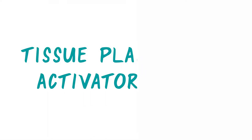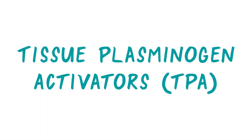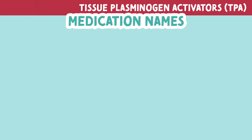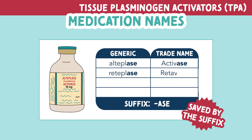Let's talk about tissue plasminogen activators, or TPAs. We are saved by the suffix because most of these medications end in '-ase.' The common ones are Alteplase (brand name Activase), Reteplase (brand name Retevase), Streptokinase, and Tenecteplase (brand name TNKase).